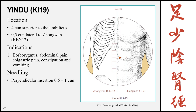Yindu, Kidney 19, is located 4 cun superior to the umbilicus, 0.5 cun lateral to the midline at the level of Zhongwan (Ren 12). Indications: borborygmus, abdominal pain, epigastric pain, constipation, and vomiting. Needling: perpendicular 0.5 to 1 cun.